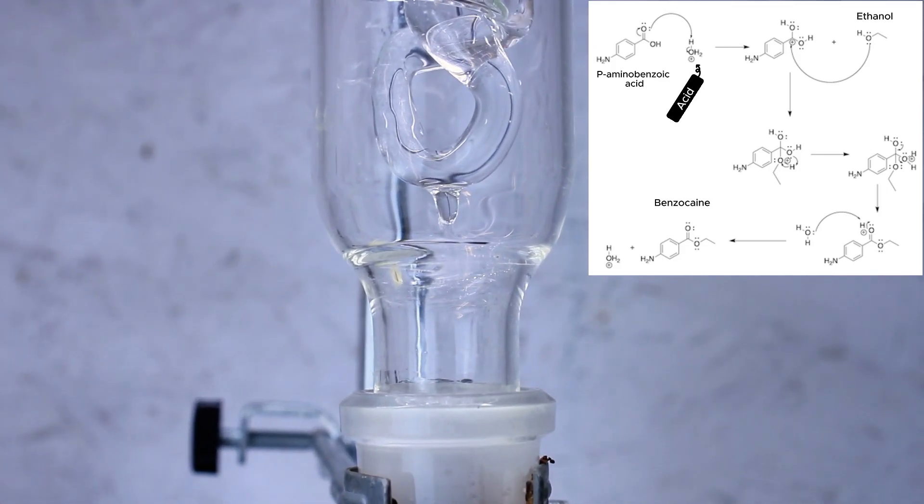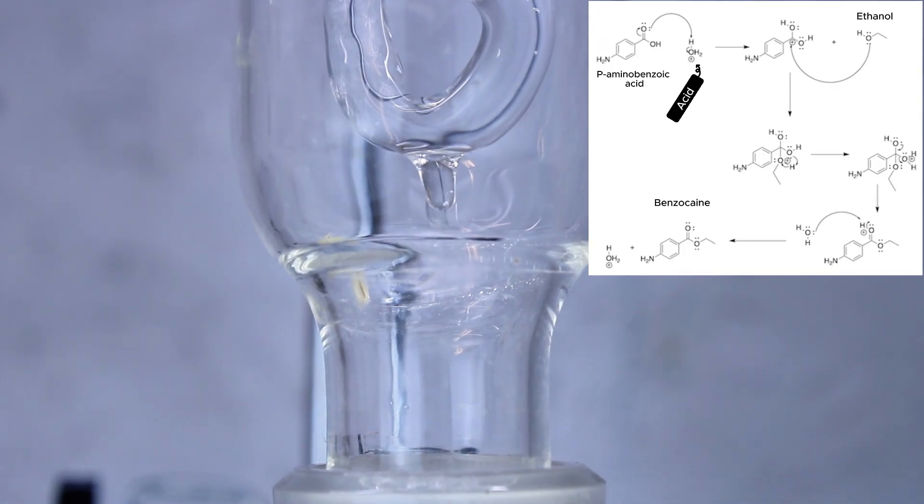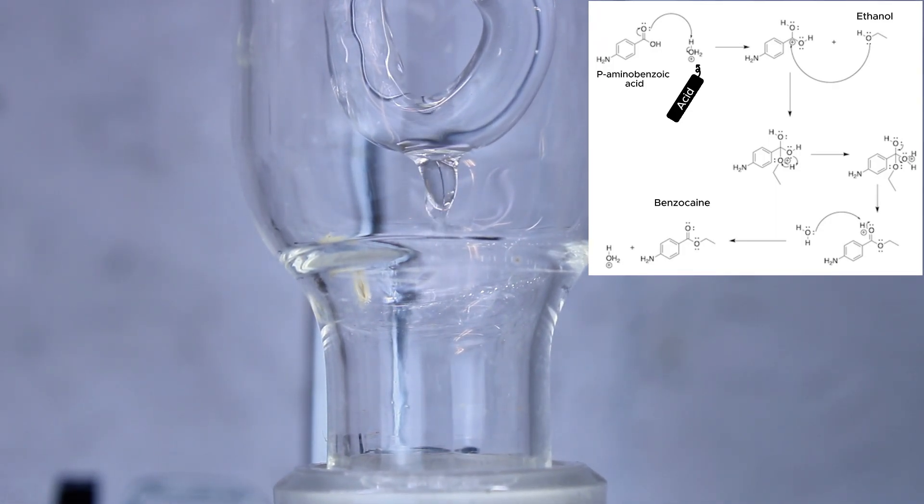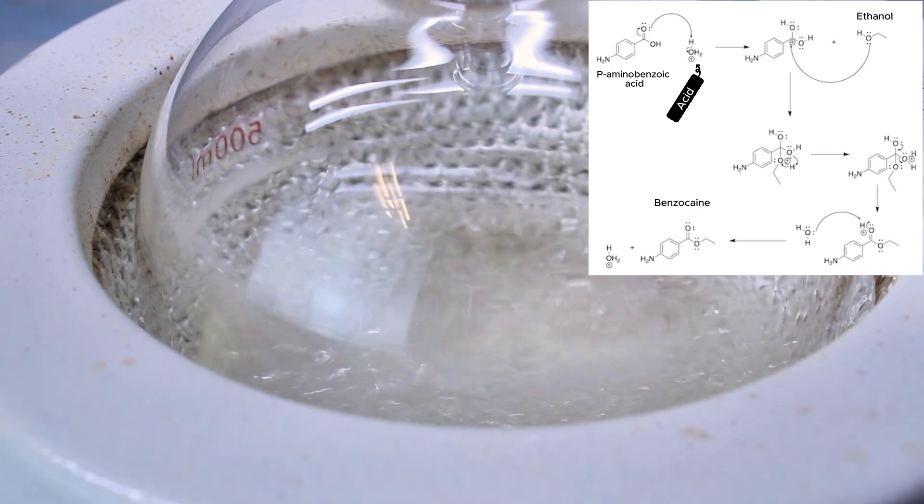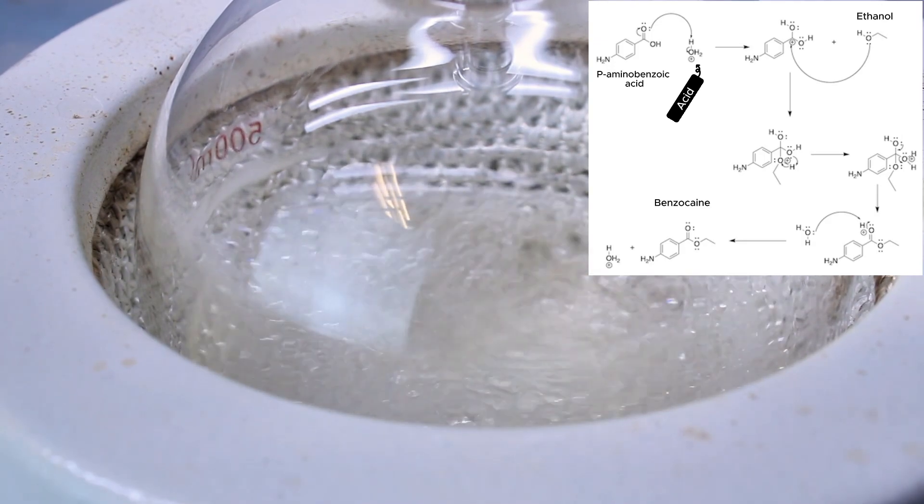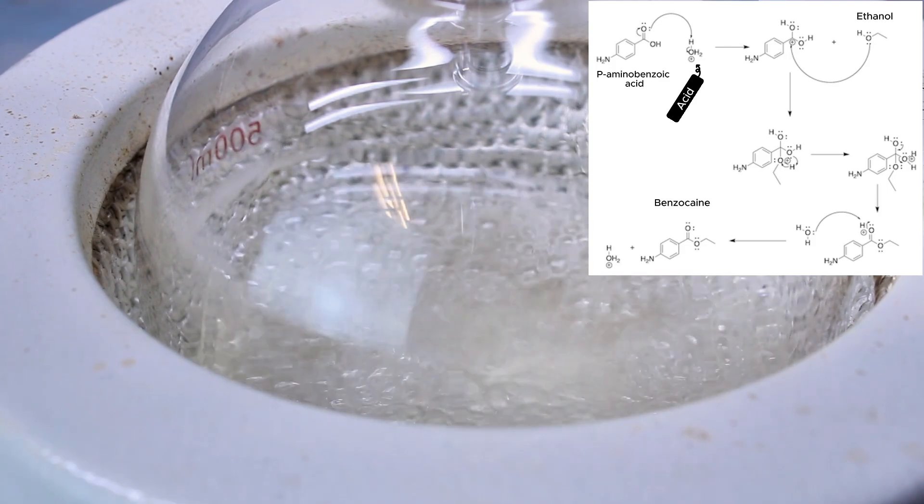This activated complex is a highly unstable tetrahedral intermediate, which is then going to break down with the elimination of water. This happens when a lone pair of oxygen forms a pi bond with carbon, which will expel the water. This results in our ester, but with an extra hydrogen on it, which is actually given up to regenerate our sulfuric acid catalyst.